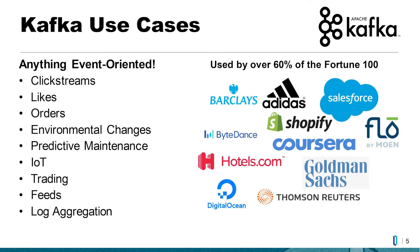What are some of the use cases of Kafka? Apache Kafka is useful for any event-oriented application. If you have a website, you can use it to collect your click streams or to better understand how people use your site. Do you take online orders? That's a stream of events. How about IoT devices? Kafka has become nearly ubiquitous in enterprise organizations. Apache advertises that more than 60% of the Fortune 500 uses Kafka, but I believe that number to be much higher. It's used across nearly every industry and every size organization.